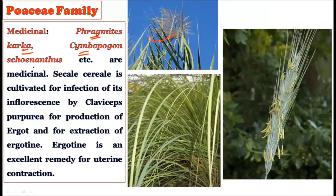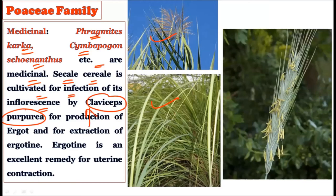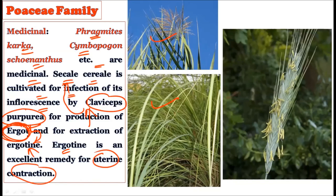Other aromatic/perfume-producing grasses include Cymbopogon citratus (lemon grass) and Cymbopogon martini (Geranium grass), all producing scented essential oils used in perfumery. For medicinal importance, Phragmites karka and Cymbopogon schoenanthus are medicinally important. Cereals are also cultivated for infection by Claviceps purpurea fungus (ergot) — from which ergotinine is extracted, an excellent remedy for uterine contraction.